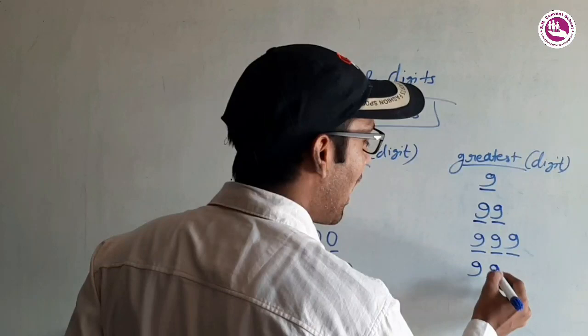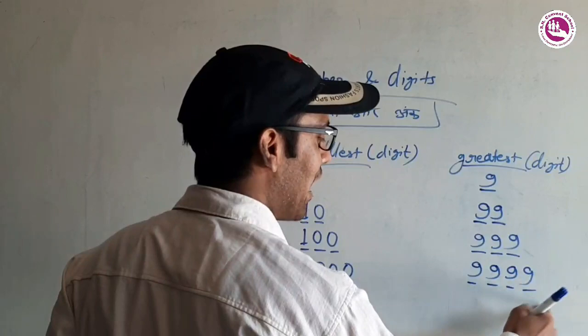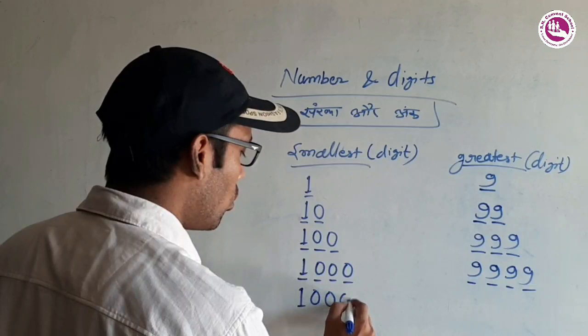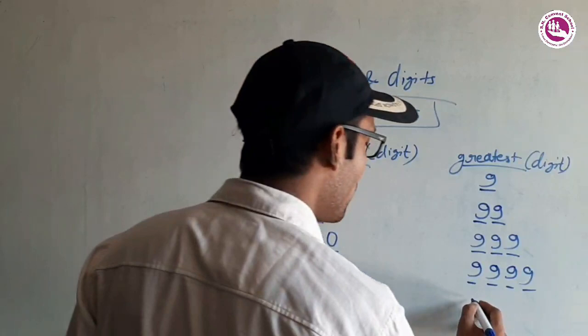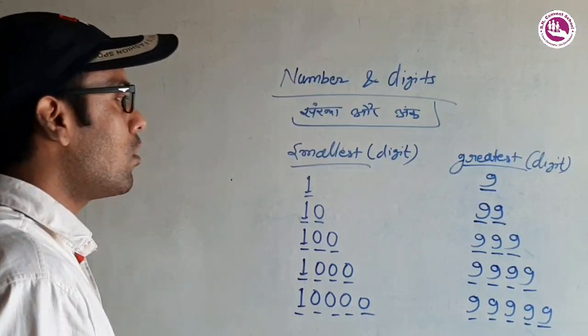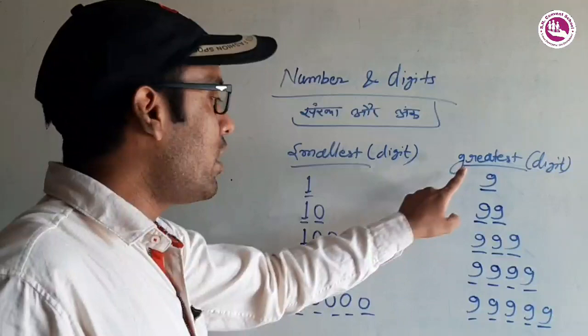Four-digit greatest number is 9,999. Five-digit smallest number is 10,000 — one, two, three, four, five digits. And five-digit greatest number is 99,999 — nine, nine, nine, nine, nine. To summarize: smallest numbers go 1, 10, 100, 1000, 10000; and greatest numbers are 9, 99, 999, 9999, 99999.